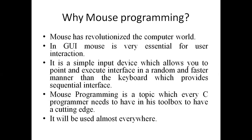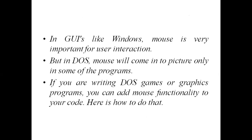You are dealing here within the DOS environment. In GUIs like Windows, the mouse is very important for user interaction, but in DOS the mouse comes into picture only in some programs — when you are handling events or designing any graphics package using C functions. If you are writing DOS games or graphics programs, you can add mouse functionality in your code.